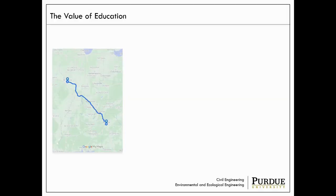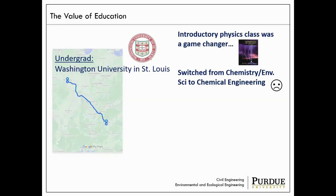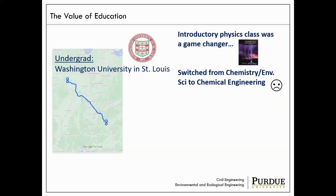Education is really the most valuable thing. I first went to college in my hometown, St. Louis, Missouri. I took an introductory physics class that was a real game changer for me — I loved it and the instructor. So I changed from a chemistry environmental science degree to chemical engineering after my first year. Unfortunately, I ended up doing more process engineering than chemistry, so I got a little disappointed. That's why I needed to reroute myself.